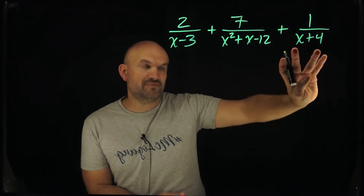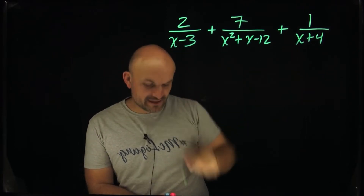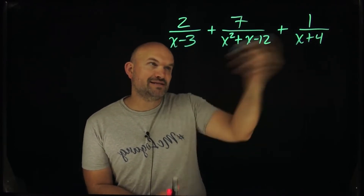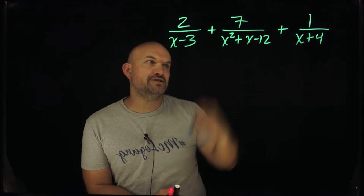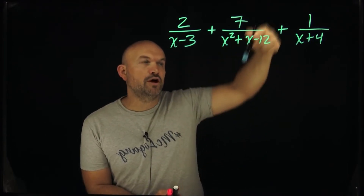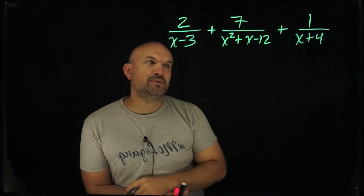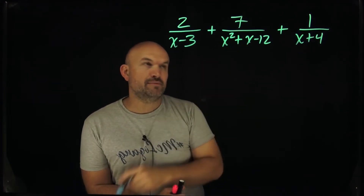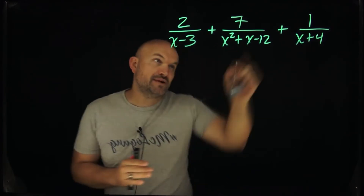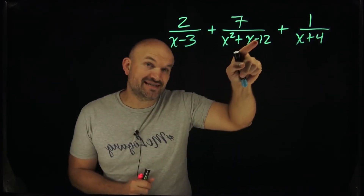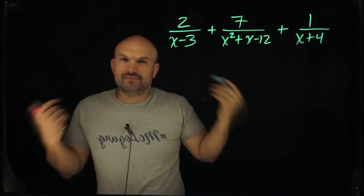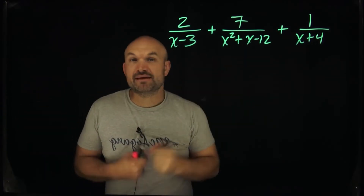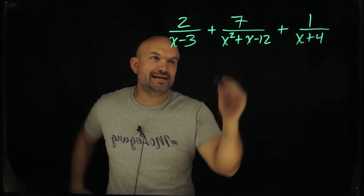I can't really simplify the first or last denominator, but I can simplify the middle one. I recognize it's a quadratic trinomial, so I'm thinking: what two numbers multiply to give me negative 12 and add to give me 1 — the coefficient of the middle term? Immediately I'm thinking of two factors with a difference of 1, and that comes to 4 and 3. To get a positive 1, that's going to be positive 4 and negative 3.